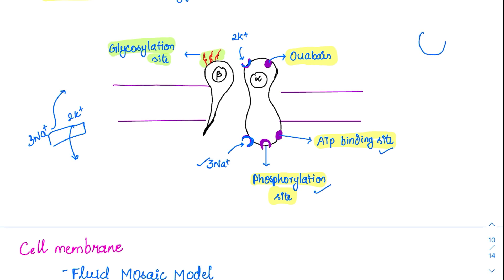The sodium-binding site, phosphorylation site, and ATP-binding site are all present on the inside. If the sodium-potassium ATPase stops functioning, the sodium it normally pumps out accumulates inside. Since ECF sodium is already high, more sodium enters the cell, and water follows — the cell swells and bursts. That is why this pump is essential for maintaining cell shape and size.